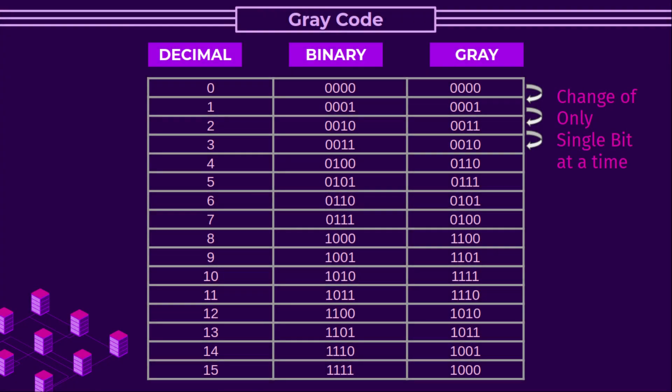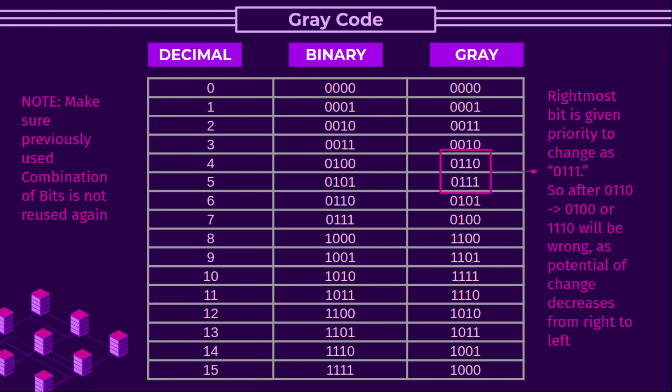As you can see, there is a change of only one bit at a time, as seen in the highlighted example. The rightmost bit is given priority to change — for example, from 0110 to 0111. So a change of 0110 to 0100 or 1110 would be wrong, as the potential of change decreases from right to left. Make sure previously used combinations of bits are not reused.